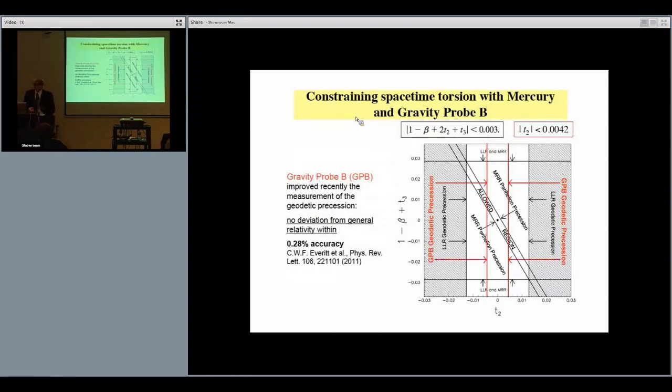This is the new measurement which has been done by Gravity Probe B. Gravity Probe B has measured geodetic precession with better accuracy than lunar ranging at the moment—at the level of 0.28 percent instead of 0.64 percent. This allows us to move this excluded region closer, and combining the Moon, Mercury, and GPB, we get this smaller allowed region. The range of allowed values for t2 and t3 goes below per mil.